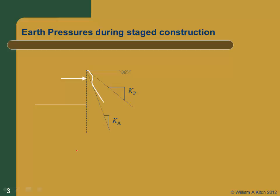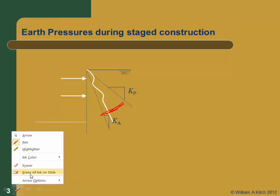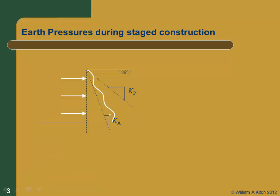Then we're going to excavate down to our next level. The wall down here is going to be allowed to move — it could get as low as the active earth pressure, or it might be someplace between active and passive. Then we're going to install our second strut and pre-stress it. Now we're going to have some earth pressure that's higher near the strut, then decrease some below that. It should always be somewhere between the active and passive envelopes.